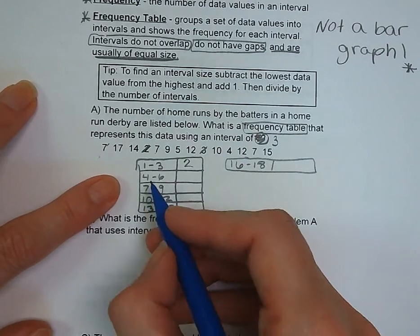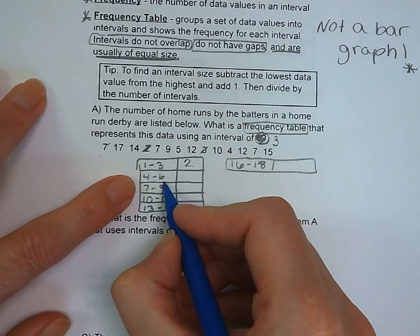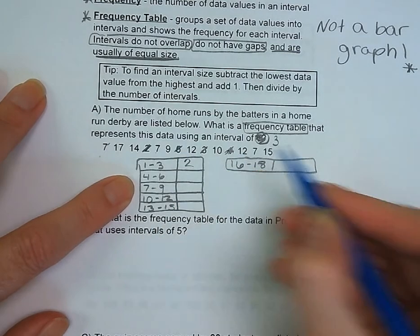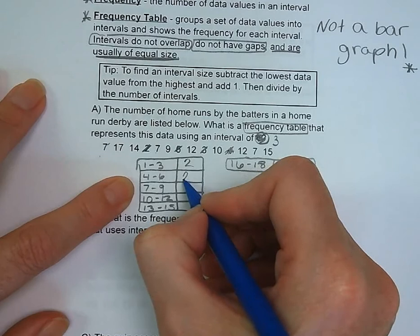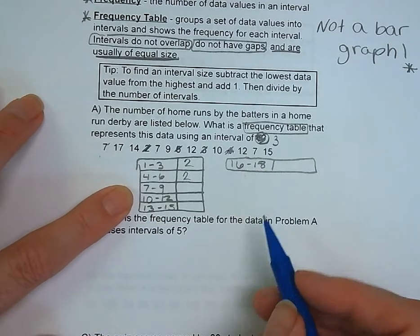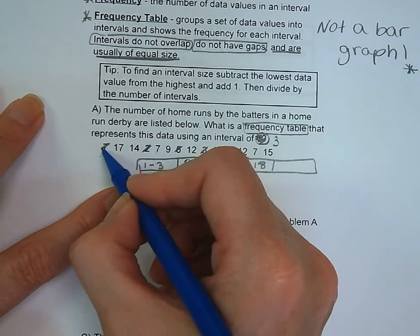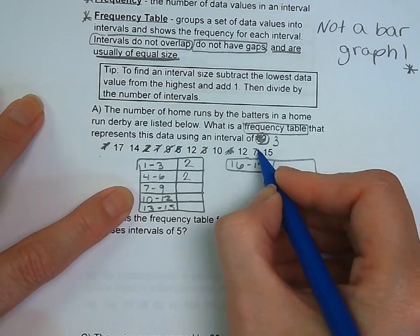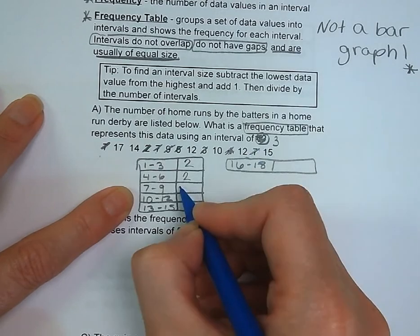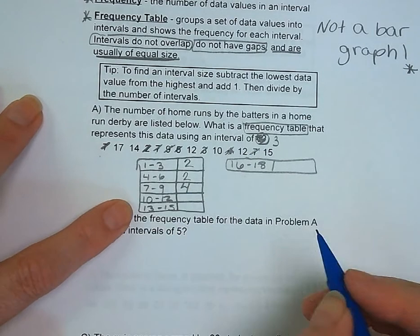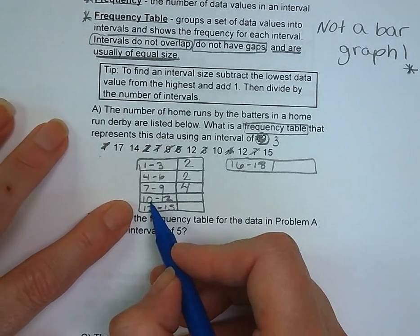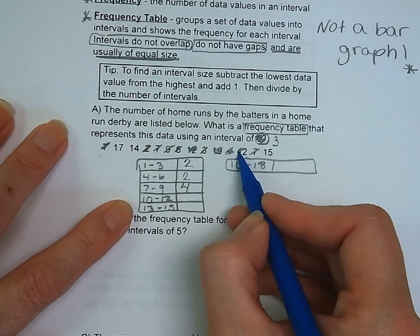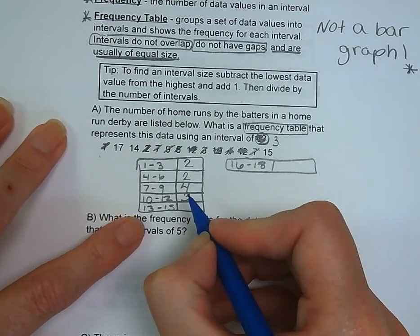Cross them out as you go, that way you can make sure you're getting them all. Next up, we're looking for between 4 and 6. We've got a 5 and a 4, so that is 2 data points. Next up, 7 through 9. We've got one 7, another 7, a 9, and there's another 7. So there are 4 in the 7 to 9 range.